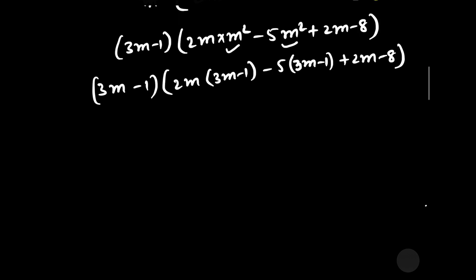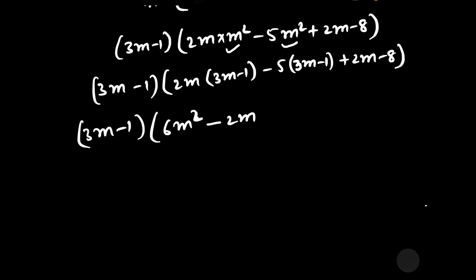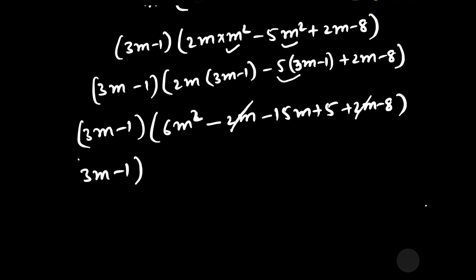Further simplifying, we have (3m − 1) times (6m² − 15m − 3). Adding +5 and −8 gives −3. So the expression inside becomes 6m² − 15m − 3. We will substitute m² = 3m − 1 once again into 6m².